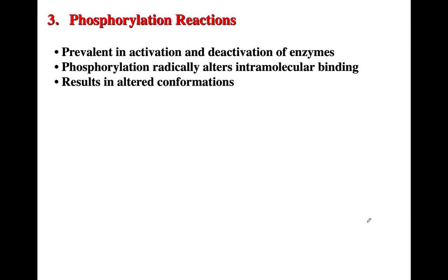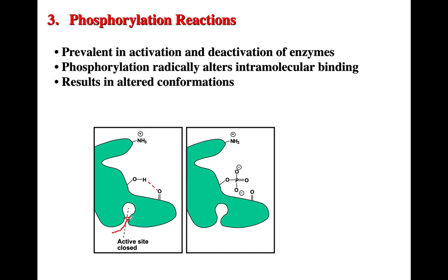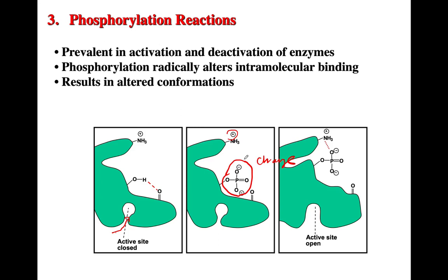Phosphorylation reactions are prevalent in activation and deactivation of enzymes. Phosphorylation alters intermolecular binding, leading to changes in conformation. For instance, when the active site is closed and phosphorylation takes place, the change in charge of the functional groups allows interaction between the positively charged amine and the negatively charged phosphate. This ionic interaction causes an overall conformational change in the molecule, leading to opening of the active site.